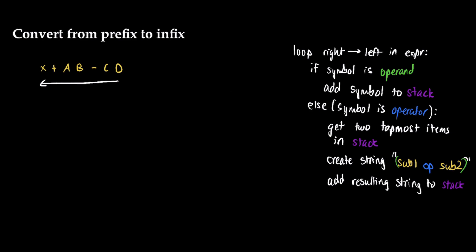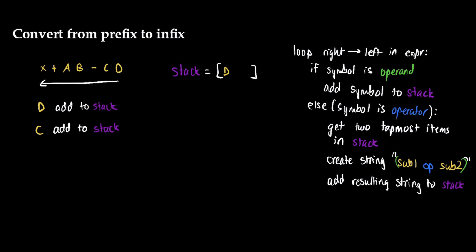Let's trace through the example. Starting with the last character, d — it's an operand, so we add it to the stack. Next is c — also an operand, so add to stack. The stack now has d and c. Next is the minus sign, which is an operator, so we get the two topmost items from the stack and create a new sub-expression.